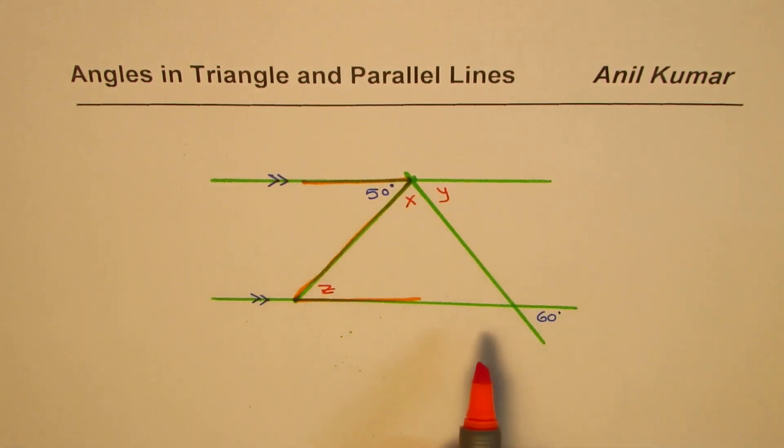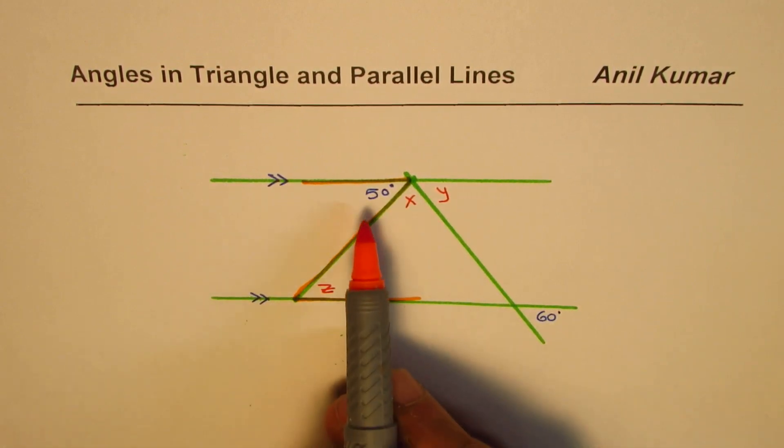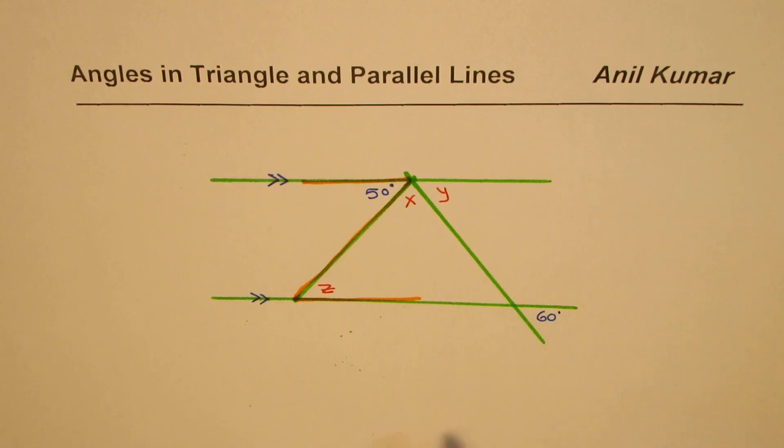Now here we are given a figure. You need to calculate the angle x, y and z. You are given an angle of 50 degrees and 60 degrees. You can pause the video, answer the question and then look into my suggestions.